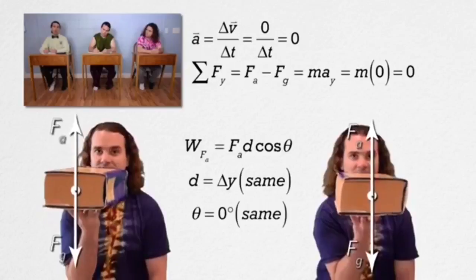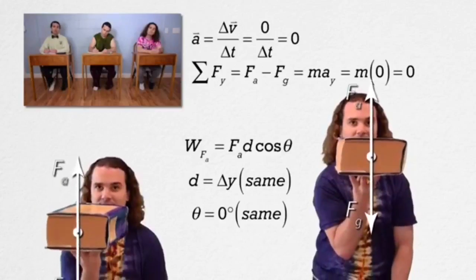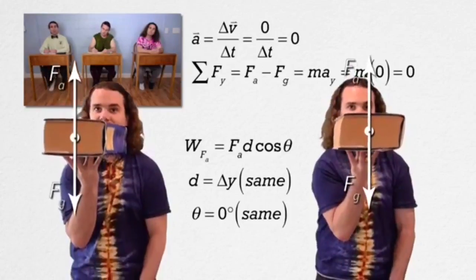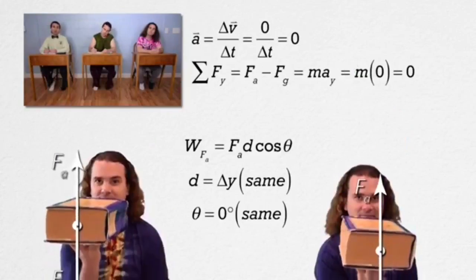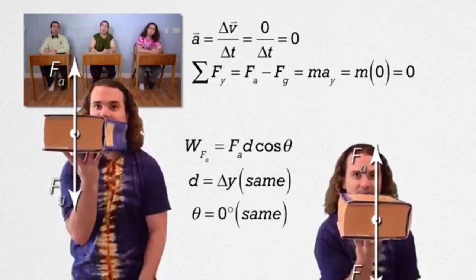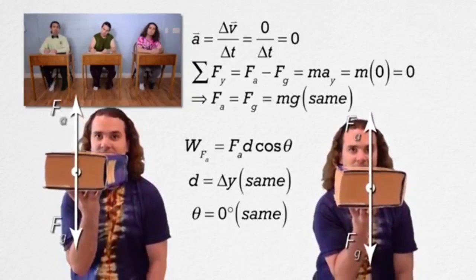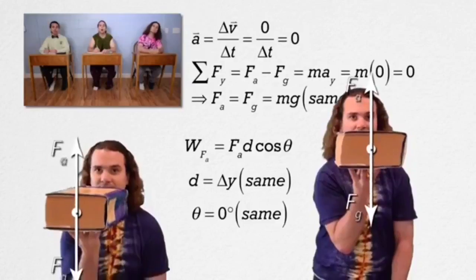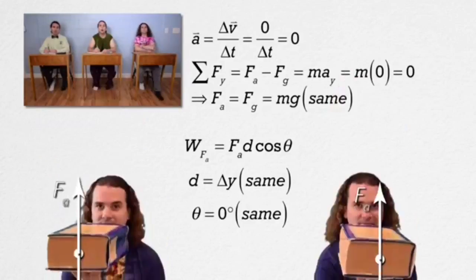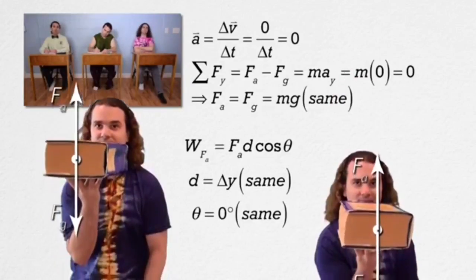Force applied minus force of gravity, and that force equals mass times acceleration, which equals zero, because it's at a constant velocity. And therefore, the force applied in each case equals the force of gravity, and therefore, because the mass of the book is the same, the force applied is the same.